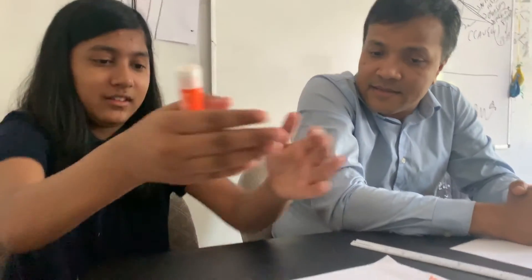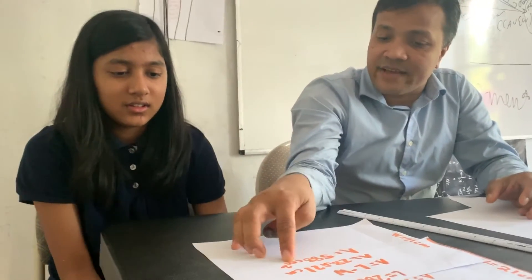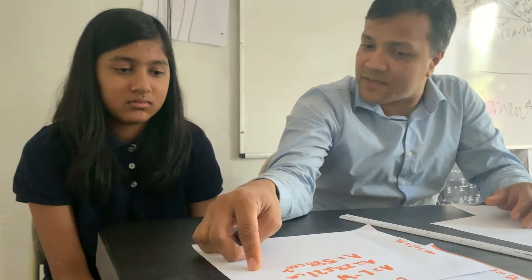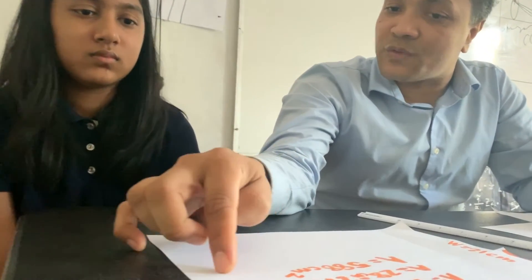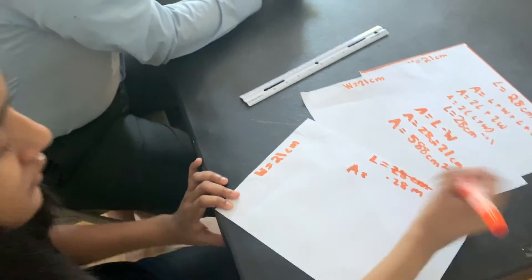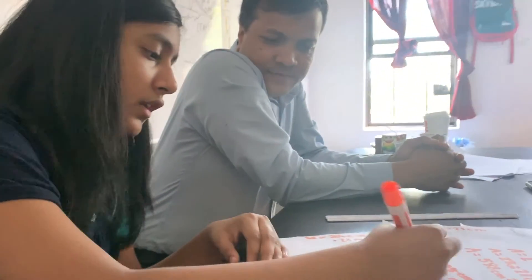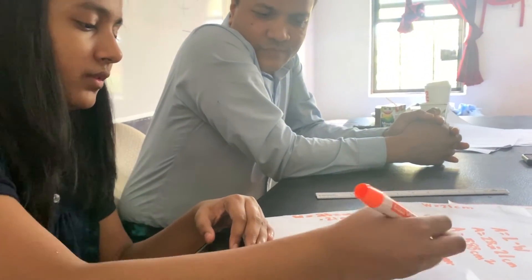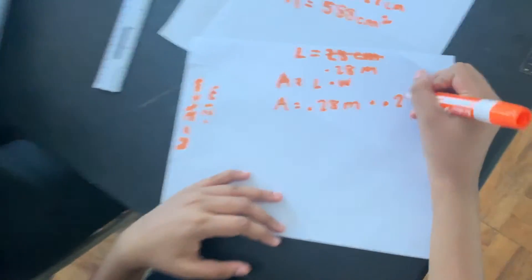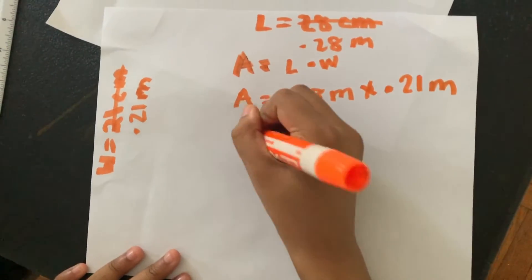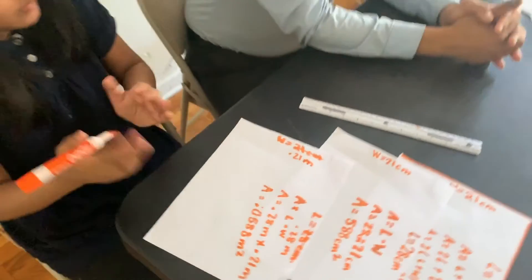What do you mean it's not acceptable? I understood this was right. Because the units — centimeter is not an SI unit. I want you to convert centimeters to SI units. What is the SI unit for length? You have to convert centimeters to meters, or centimeters squared to meters squared. It's 0.28 meters, and this one is 0.21 meters. So A equals length times width, which is 0.28 meters times 0.21 meters.